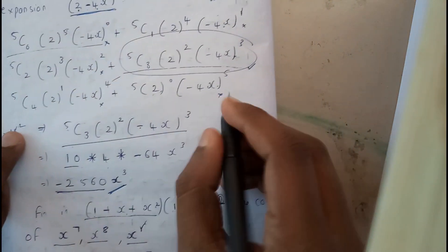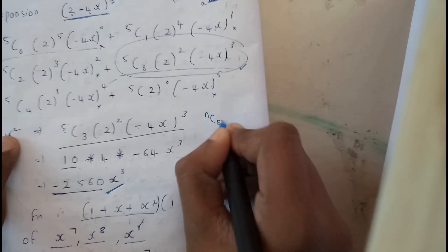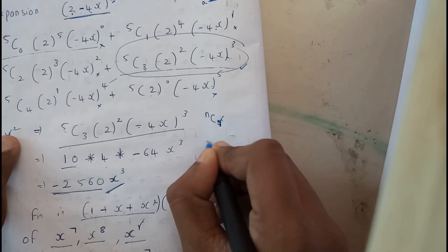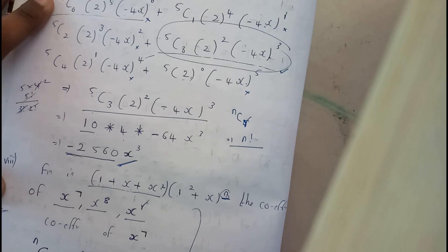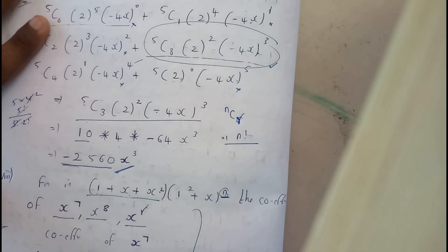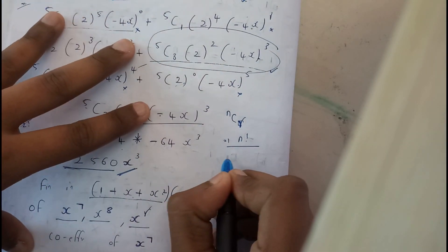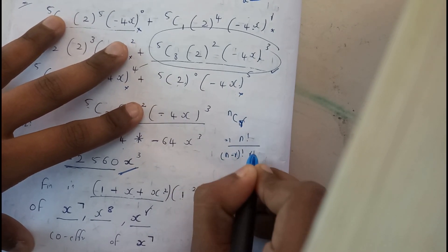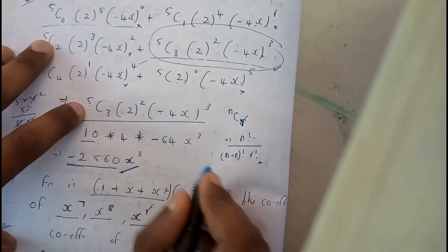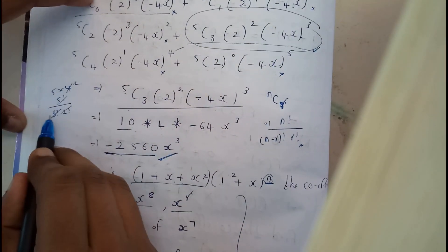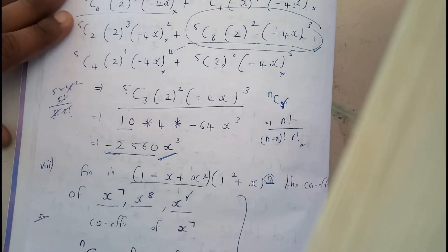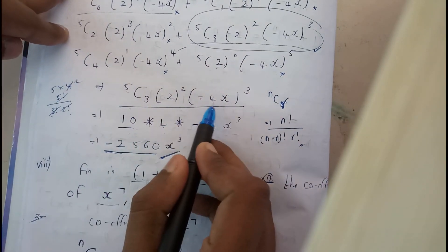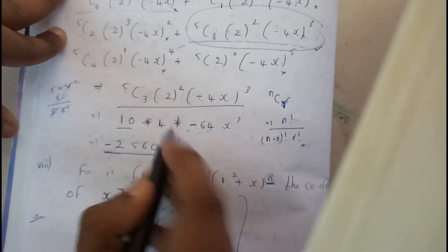So, I got this. So, if you have any doubt, NCr is equals to N factorial by N minus r factorial into r factorial. So, here 5C3, 5 factorial by 3 factorial into 2 factorial. That's how we get 10. So, x square is minus 4, minus 4 whole cube is minus 64 x cube.